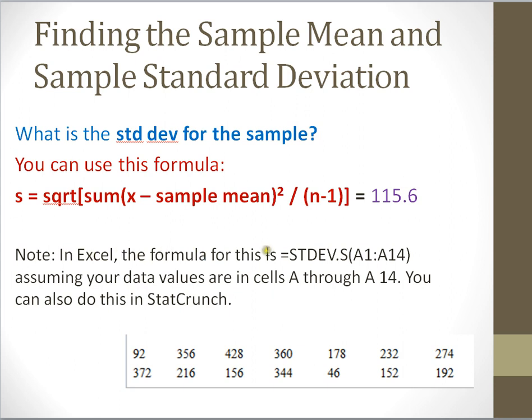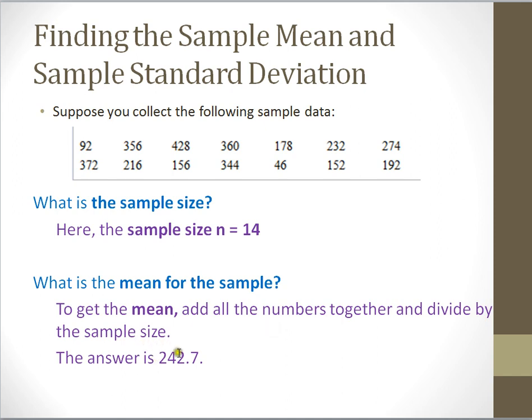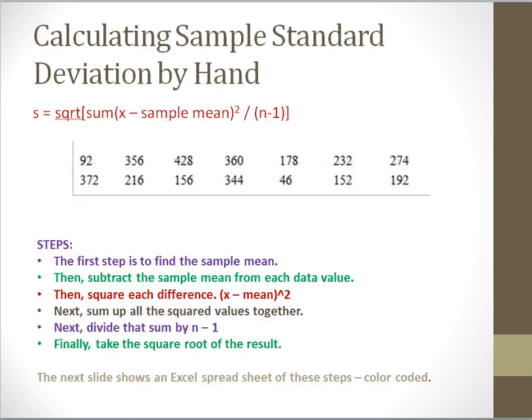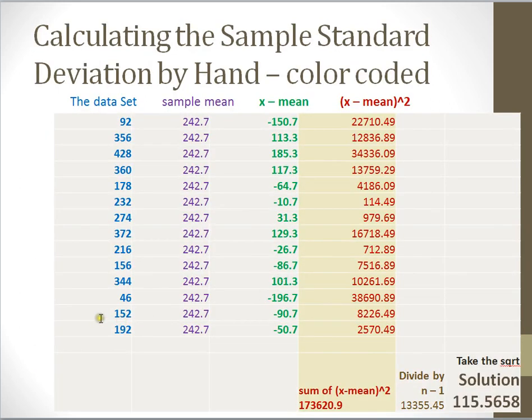If you do this in Excel, the formula is the following. You can also do this in StatCrunch. But here's how you do it by hand. Again, remember, this is our data set, and each of these values is one of our x's. Also remember that our sample mean is 242.7. So I'm going to use kind of a long hand, and I'll show you here on this slide each step.